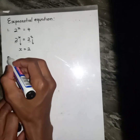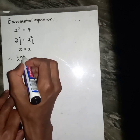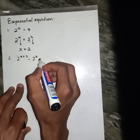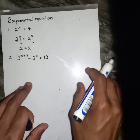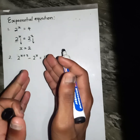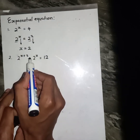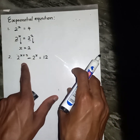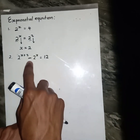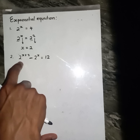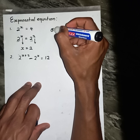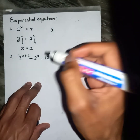Suppose I now give you another example like this: 2 to the power 2x minus 2 to the power x equals 12. I ask you to solve for x. Now in between these two I have a negative sign, so I must split this one. How am I going to split this one?